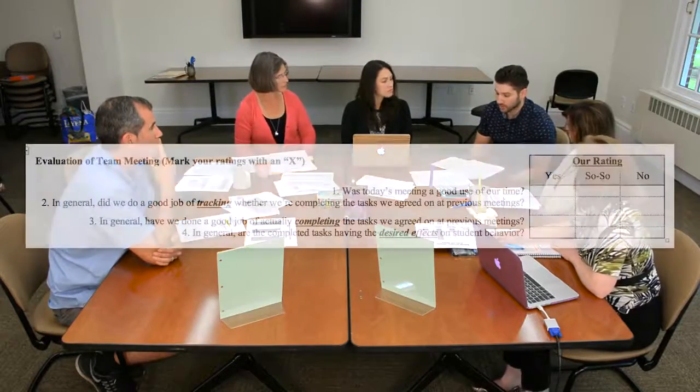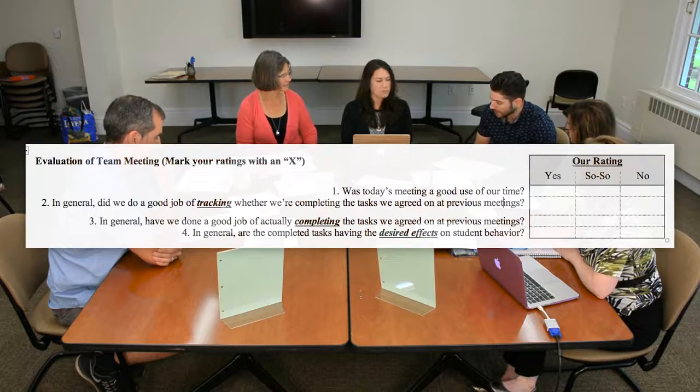Let's go over our Quick Four to close this meeting out. First: was today's meeting a good use of our time? Yes. In general, did we do a good job of tracking whether we're completing the tasks we agreed upon at previous meetings? Yeah, I think so. In general, have we done a good job of actually completing the tasks we agreed upon at previous meetings? We didn't get the bus assignments done, but Rhonda's going to meet with her today or tomorrow. And the last one: in general, are the completed tasks having the desired effects on student behavior? In general — academics, certainly. So we'll continue to work on the bus. Great. Thanks, everyone. See you all next meeting.